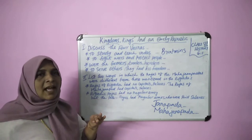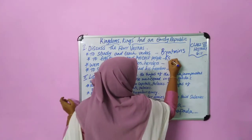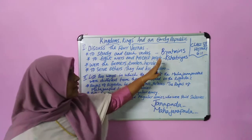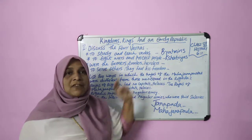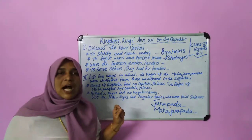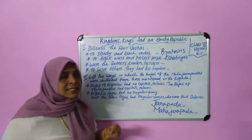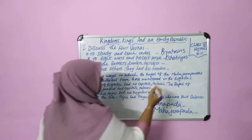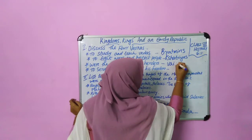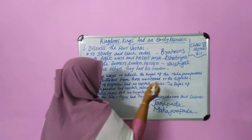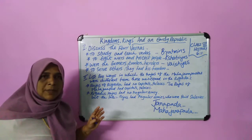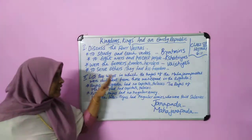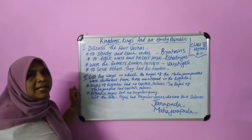The second varna, kshatriyas, were responsible to fight wars and protect people. The third varna, vaishyas, were the farmers, herders and traders.